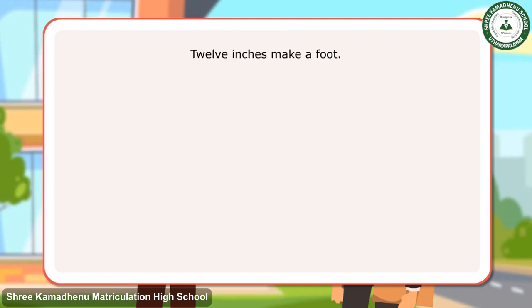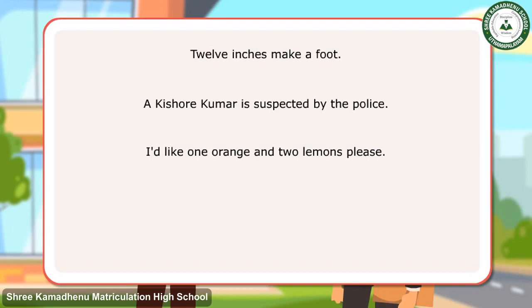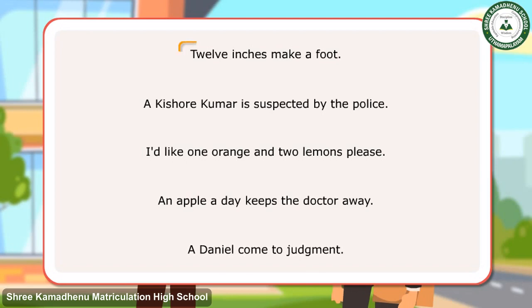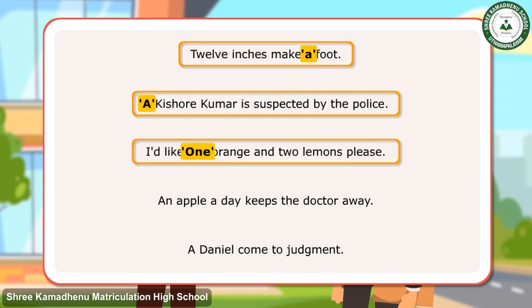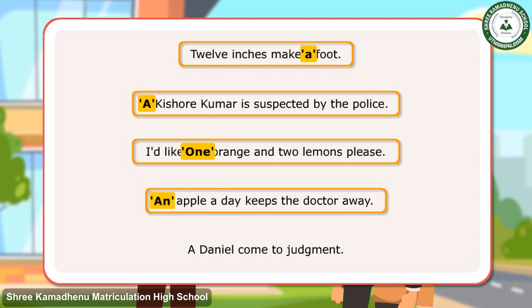Let us look at a few sentences: Twelve inches make a foot. A Kishore Kumar is suspected by the police. I'd like one orange and two lemons, please. An apple a day keeps the doctor away. A Daniel come to judgment. In the first sentence, A is used to emphasize 'foot' in its original sense of one. In the second sentence, A is used to show Kishore Kumar as a certain person. In the third sentence, 'one' is used to emphasize only one orange. In the fourth sentence, AN is used with a vowel sound. In the last sentence, A is used to make a common noun of a proper noun.